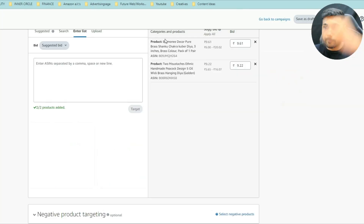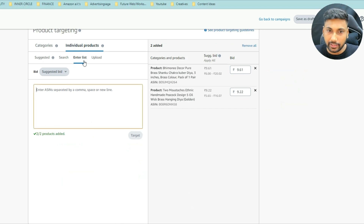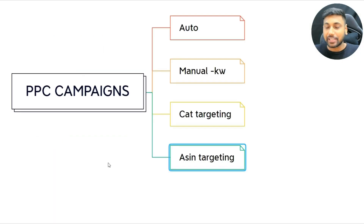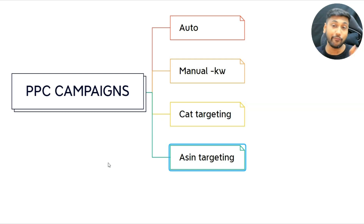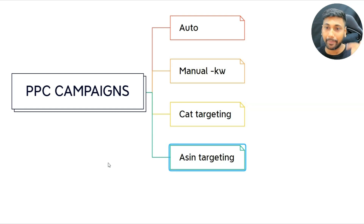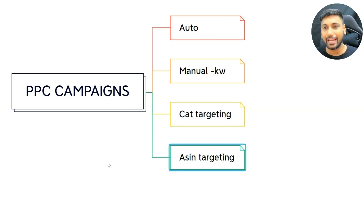Once you find all your top competitors, put their entire ASIN list here. Use the suggested bid that Amazon gives you and click 'Launch Campaign.' That sums up your four foundational campaigns — auto campaign, manual campaign, category targeting, and ASIN targeting — to get you an influx of sales. If you liked this video, give me a thumbs up and comment which strategy you liked best. If you want help managing your brand and you're already doing at least seven figures, click the link below to check out our webinar.